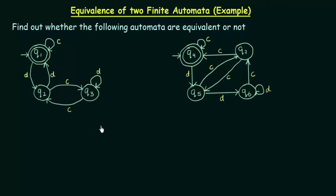In the last lecture we studied about equivalence of two finite automata — how to find out whether two given automata are equivalent or not. In this lecture we will be seeing one more example. If you have not watched the previous video, I suggest you watch it first, where I have explained the steps to follow for this procedure in detail.